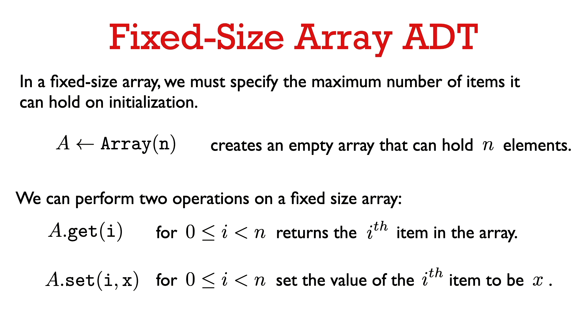We can also modify the ith element of the array with a function called set, which takes an index i and the value x that we want to set the ith element of the array to be. So these are our three operations. We can create an array, we can get the value of the ith element, and we can set the value of the ith element.